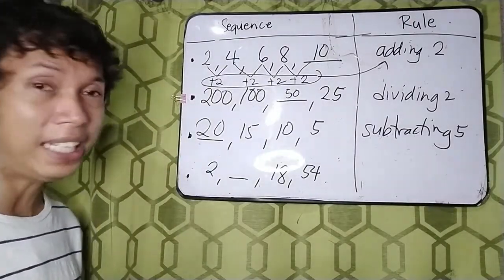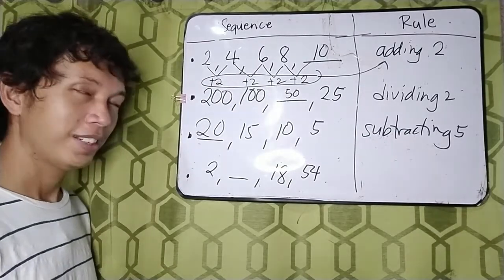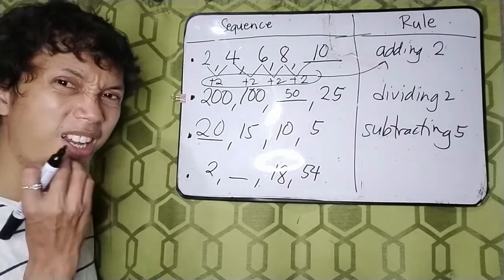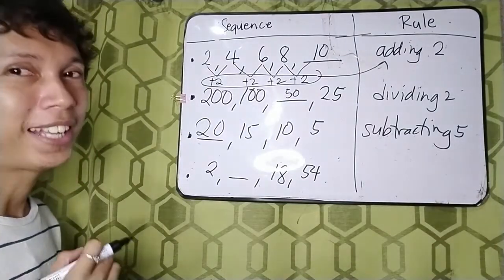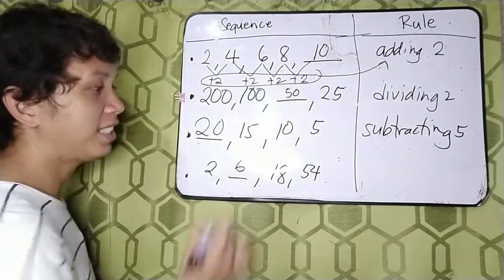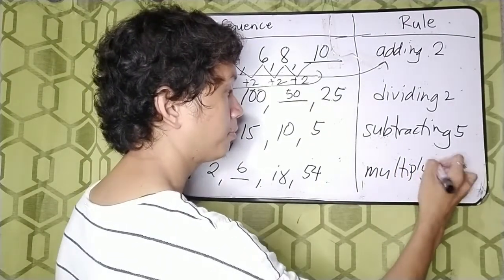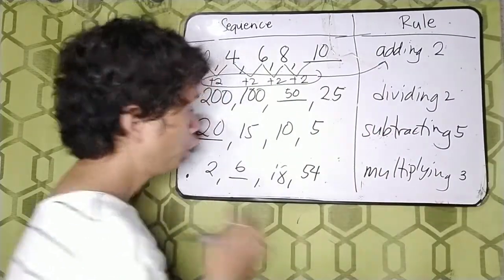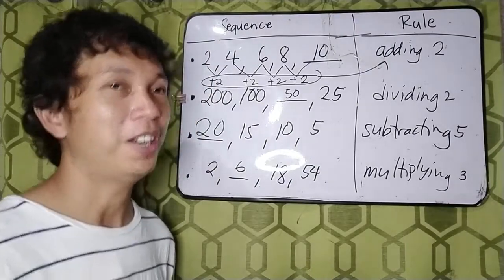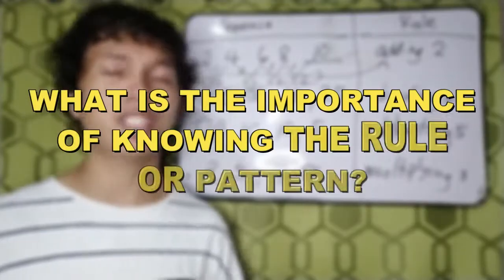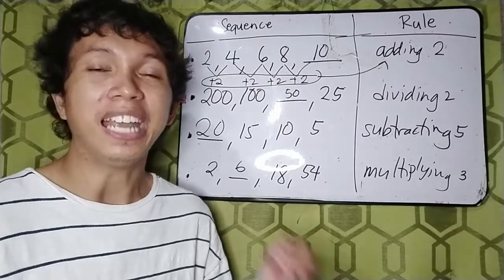Now let's have the last sequence: 2, blank, 18, and 54. What do you think is the missing term? That is 6. What do you think is the importance of knowing the rule? Let's talk about it in this video.